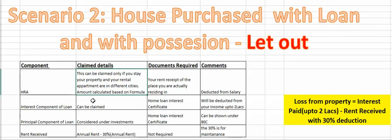The principal component is covered under 80C. And for the rent that you are receiving, you take the rent received, and from that you subtract 30% as maintenance. So overall, the income from property is calculated as: interest amount (up to 2 lakhs) plus rent received minus 30% of the rent received, which is treated as maintenance deduction.